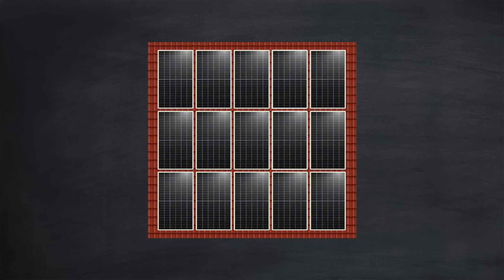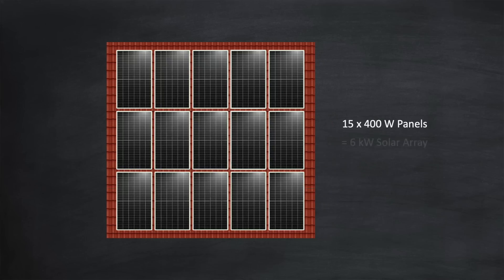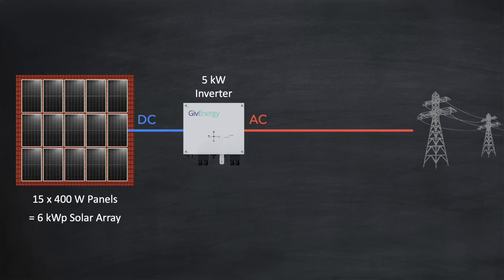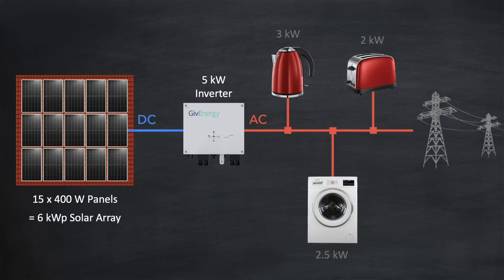Now that we have a good understanding of power and energy, let's look at how all this relates to your solar and battery setup. We'll use an example solar array of 15 panels. Each panel can produce 400 watts of power in direct sunlight, so 15 panels will produce 6 kilowatts — referred to as kilowatts peak, as this is peak output. On less sunny days the output will be less. This array is connected to a string inverter, which is in turn connected to the main circuit in the house, as is the national grid supply.